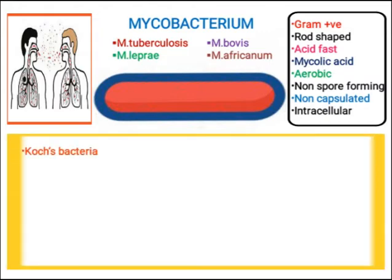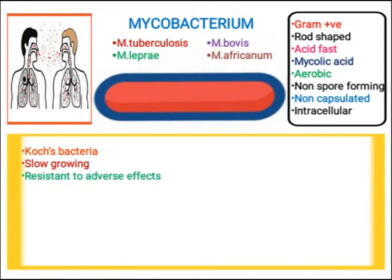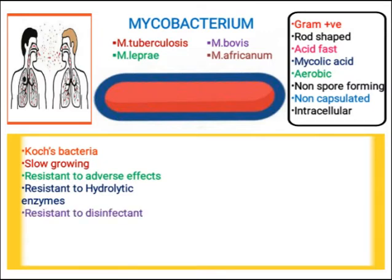Mycobacterium tuberculosis was first discovered by Robert Koch in 1882. Furthermore, mycobacterium is resistant to adverse effects — it is resistant to hydrolytic enzymes and also resistant to disinfectants.